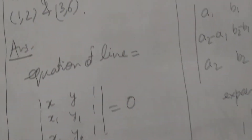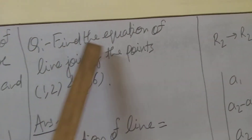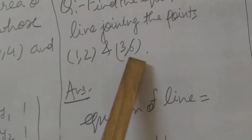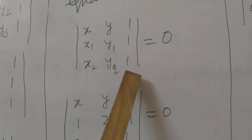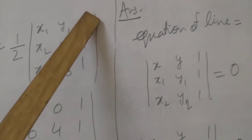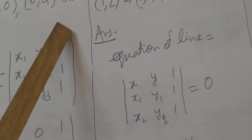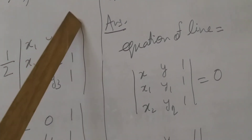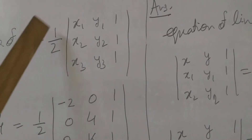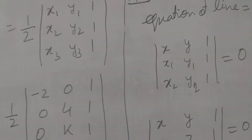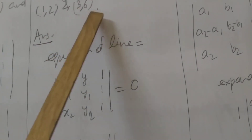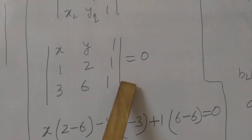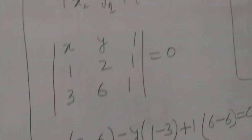Now students we are going to take one more question: how can we find the equation of a line? Find the equation of the line joining the points (1, 2) and (3, 6). The equation of line formula using determinants is: determinant with rows x, y, 1; x1, y1, 1; x2, y2, 1 equals 0. This is because finding the equation of a line means the points are collinear, so area of triangle equals 0. We substitute x1, y1 = (1, 2) and x2, y2 = (3, 6), keeping x, y, 1 in the first row.